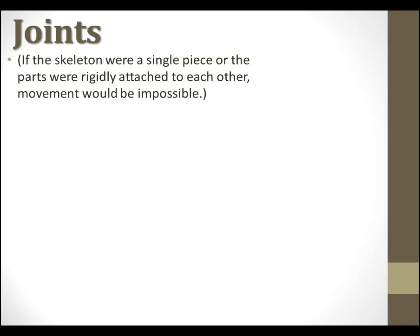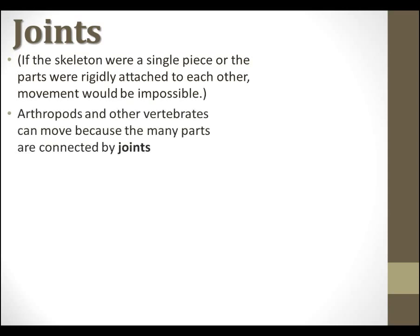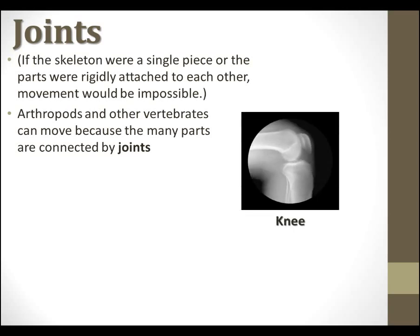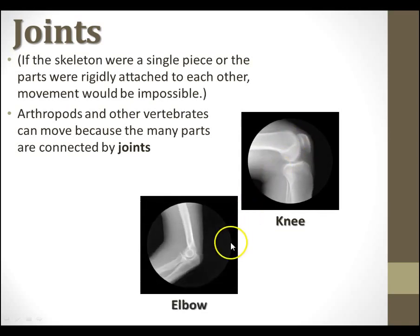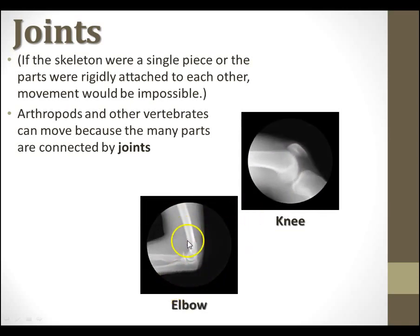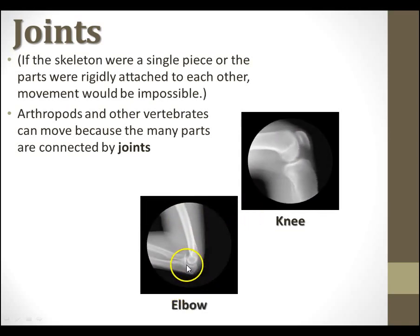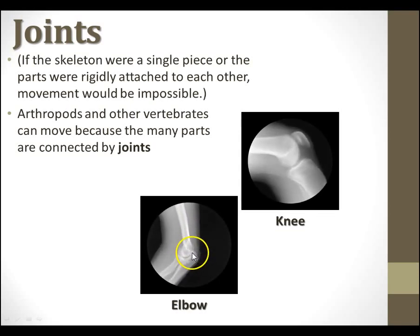And joints. If your skeleton was just a single piece, or the parts were rigidly attached to one another, movement would be impossible. Arthropods and other vertebrates can only move because the many body parts are connected by joints. Here you can see an example of a knee joint — different bones loosely connected to one another, allowing for some freedom of movement. There you can see the joint in the elbow, where the different bones have freedom of movement.